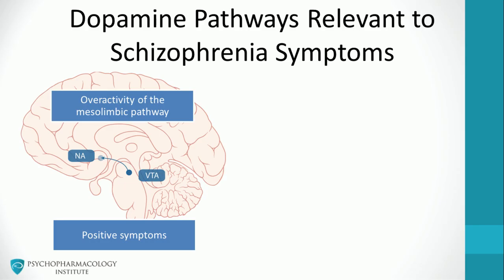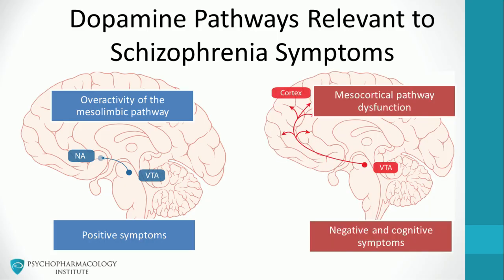In this figure, the mesolimbic pathway is shown in blue. The dopamine theory postulates that positive symptoms such as delusions, hallucinations, and thought disorder are caused by an overactivity of this pathway. In the other figure, the mesocortical pathway is depicted in red. Recent findings suggest that a dysfunction of the mesocortical pathway may be part of the neurobiology of negative and cognitive symptoms. In summary, excessive activation of the mesolimbic pathway is related to positive symptoms, while negative and cognitive symptoms might be caused by mesocortical dysfunction.